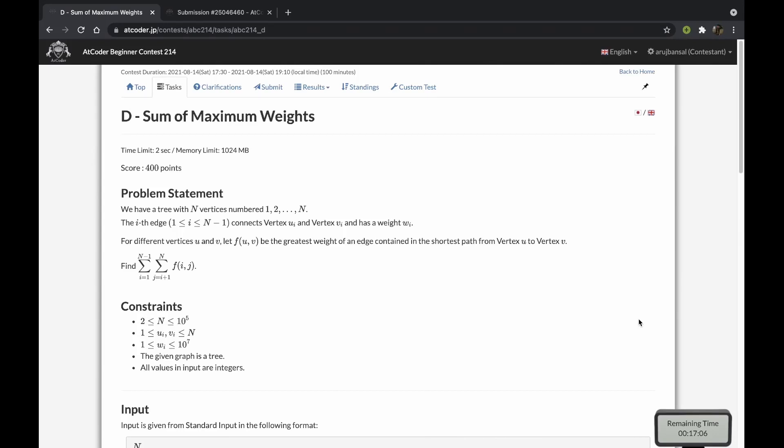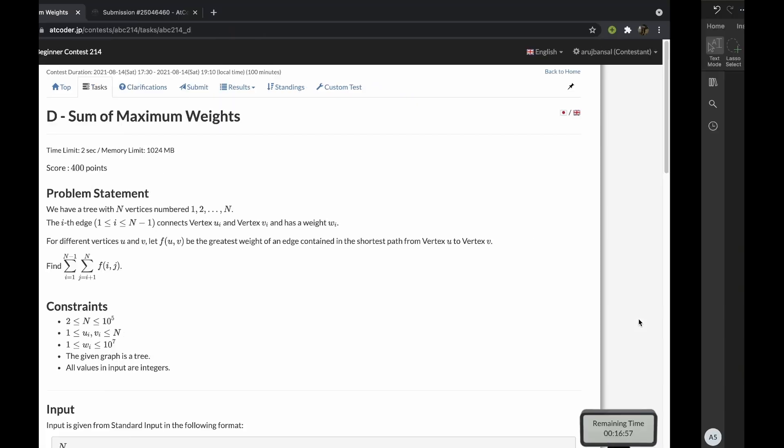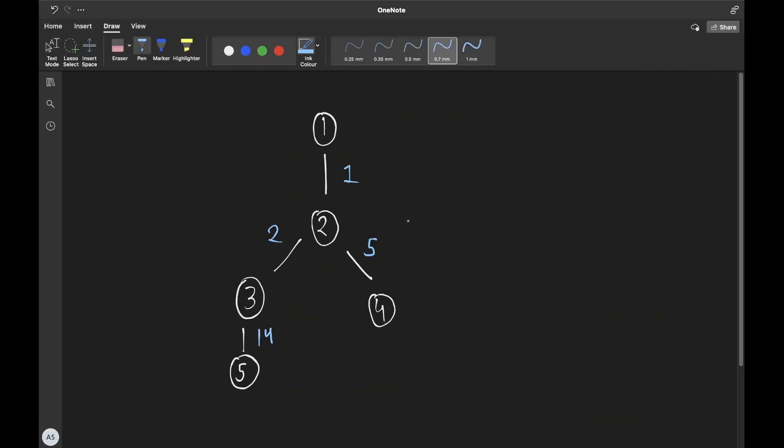Hey guys, in this video I'll be discussing the solution to the problem Sum of Maximum Weights from Atcoder Beginner Contest 214. In this problem we're basically given a weighted tree and a cost function f of u comma v, which is the maximum edge weight on a path between u and v. Since this is a tree, there is exactly one path between any two given nodes. Our task is to find the sum of this function over all pairs of nodes in this tree.